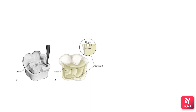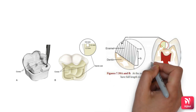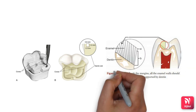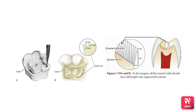Another retention form is beveling. It is important for composite restorations to produce marginal adaptation between the restoration and the tooth, by increasing the surface area for etching and also improving the bonding between the restoration and the tooth.